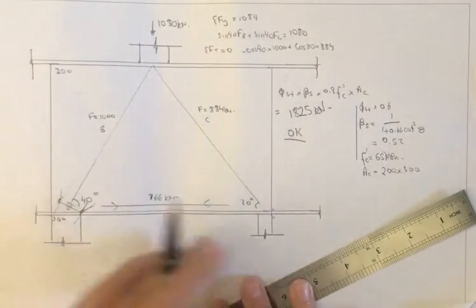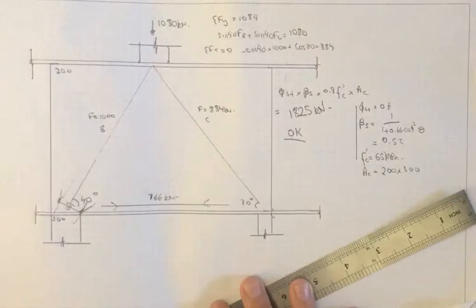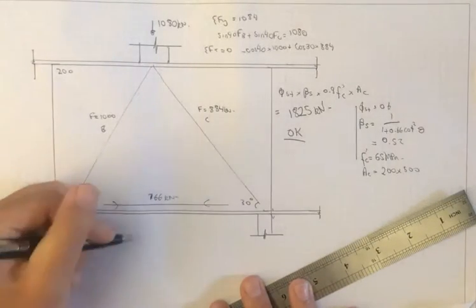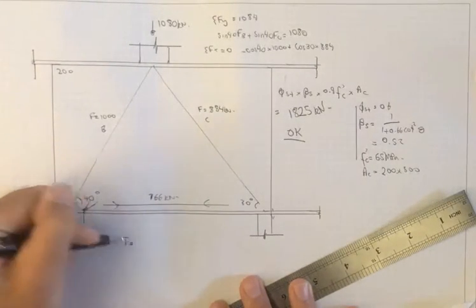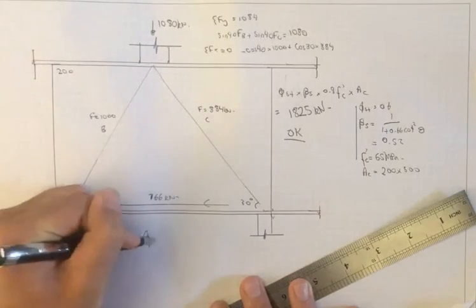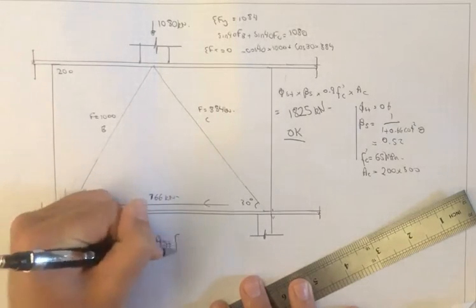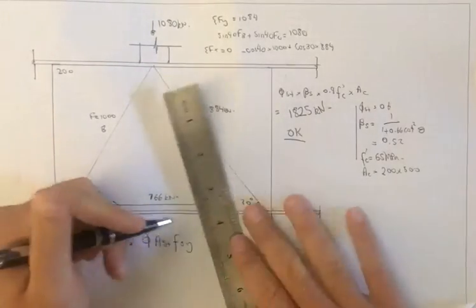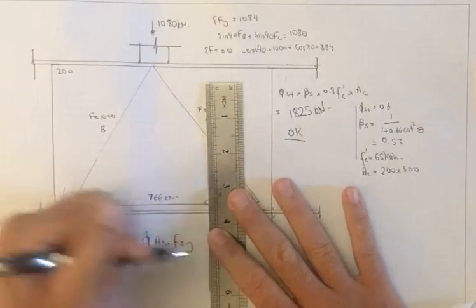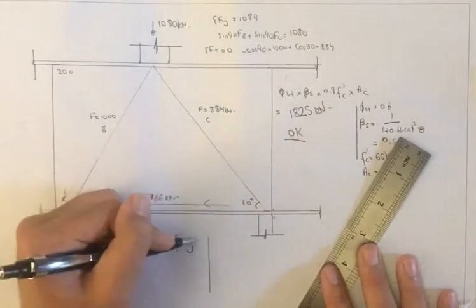The tensile capacity of the steel equals phi AST times yield strength of steel, and that must be greater than T-star.